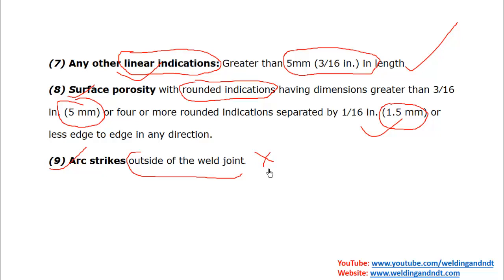These are the acceptance or rejection criteria for weld defects by visual inspection as per ASME B31.1. Friends, I hope you liked this video. Thank you very much.